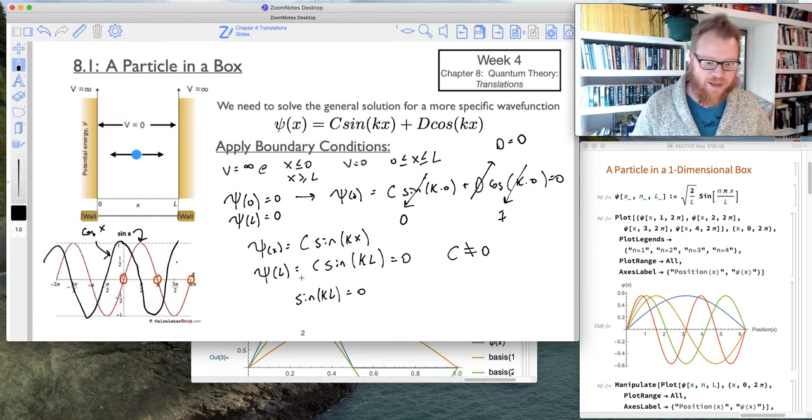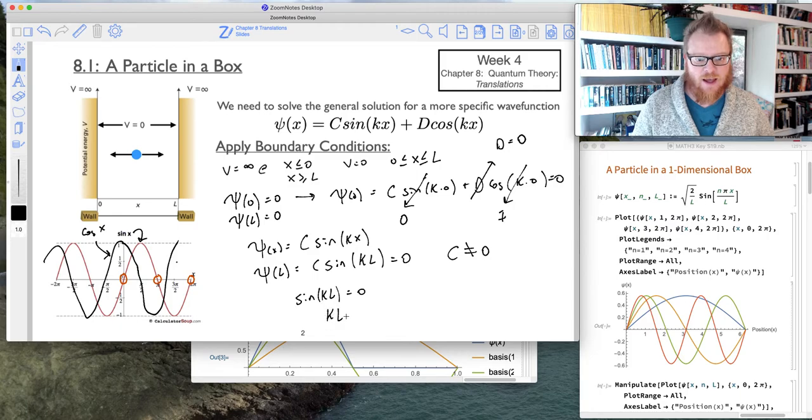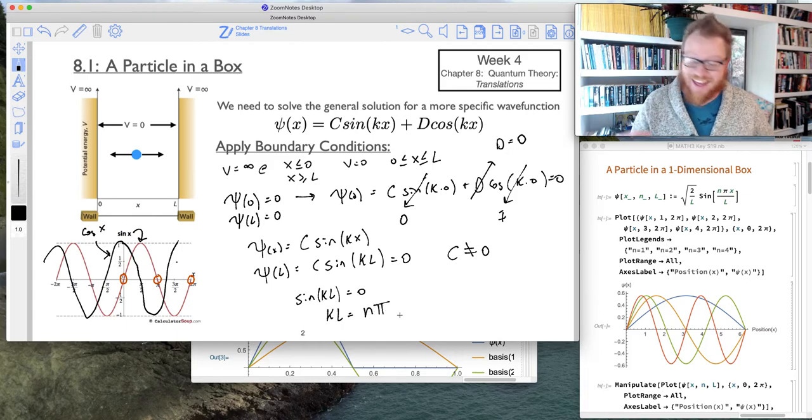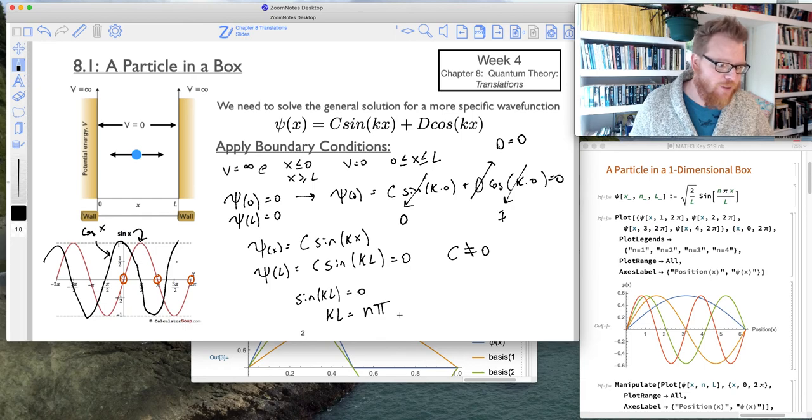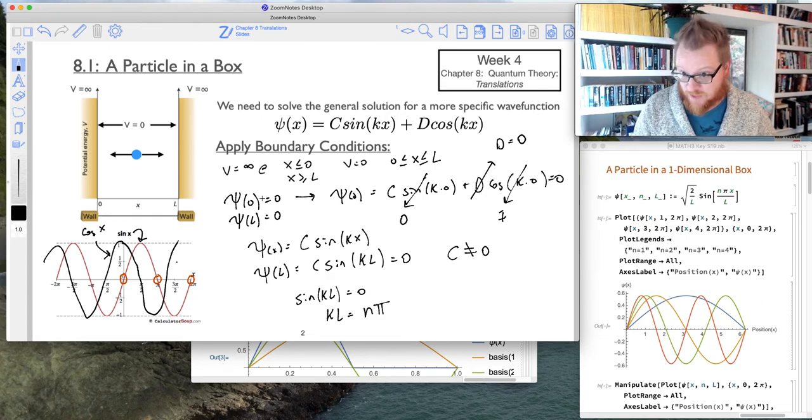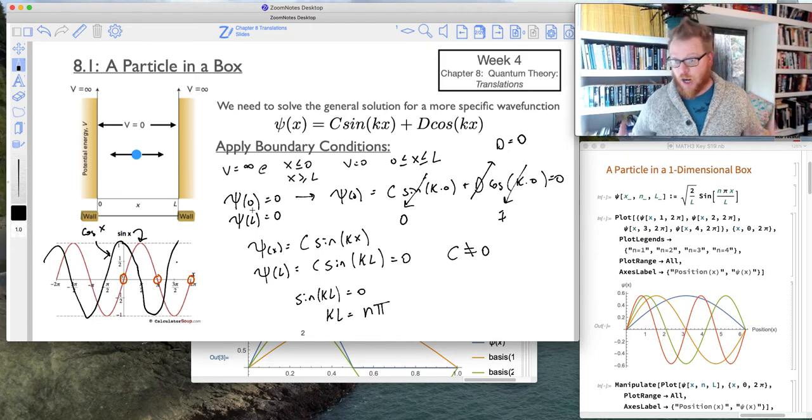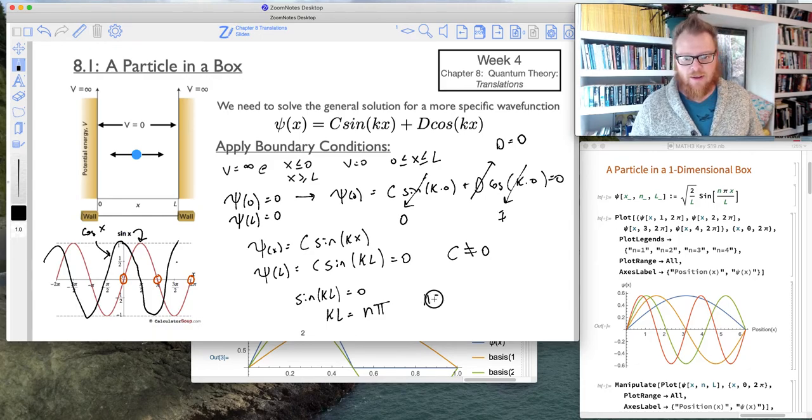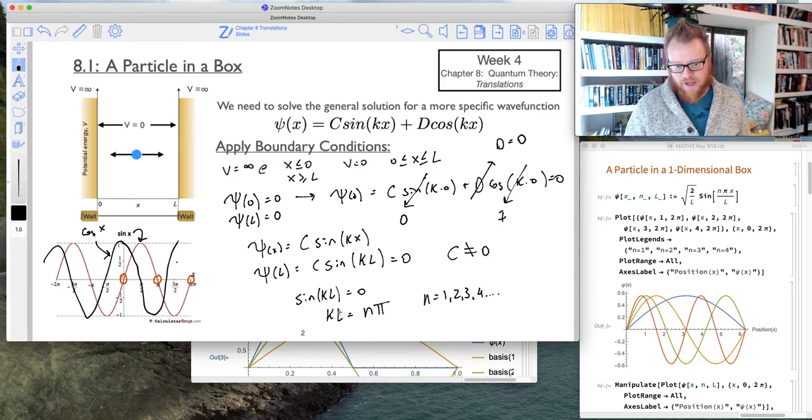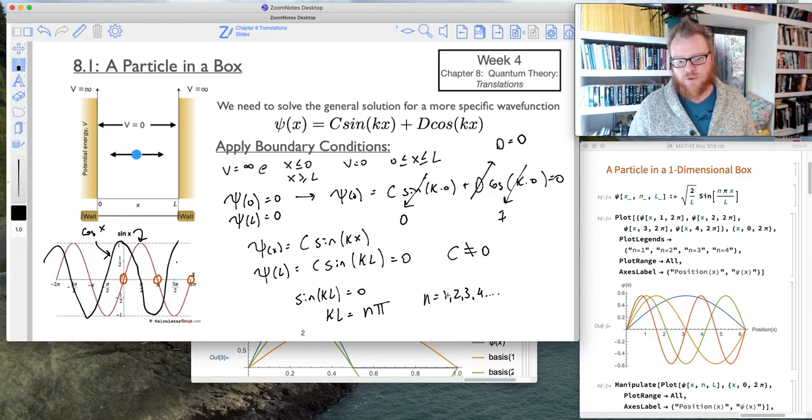So what we can say now is this quantity, k times L, has to be some integer value of pi, n pi. And specifically, because we can't have n equal to 0, because we've already established that up there, psi of 0, and we also want to establish this for positive numbers, we're going to say that n equals 1, 2, 3, 4, etc. Because for each kL, if kL equals 1 pi, we know that's going to make it equal to 0. If kL equals 2 pi, that's also going to make that equal to 0.